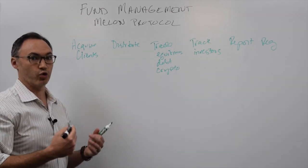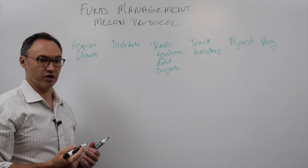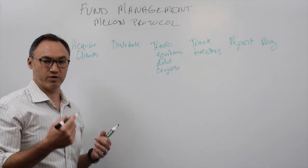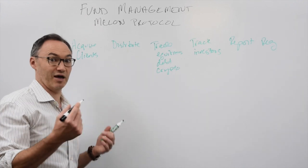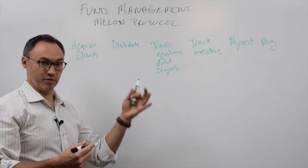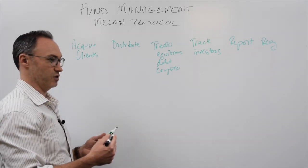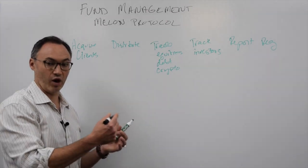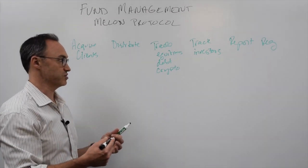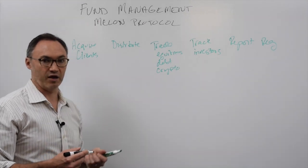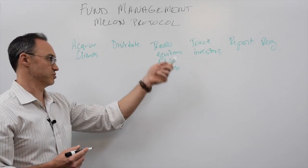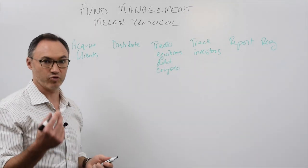Which might mean things like road shows. It might mean going to different RIAs or different distributors or different custodians and saying, here's what I have. Here's what I'm good at. Let me show you my pedigree. Let me show you everything I've done and why it might be good for your clients or your investors. Then they need to track. They need to be able to pay all the investors, either distributions or dividends or whatever it might be.